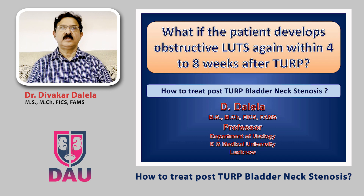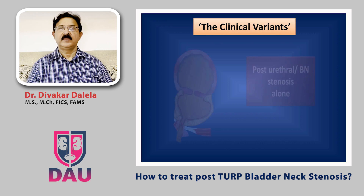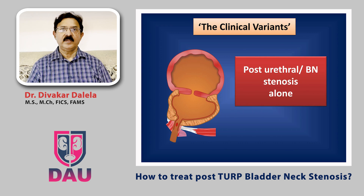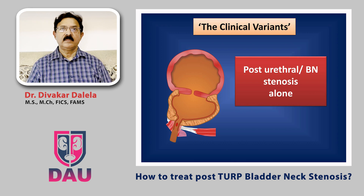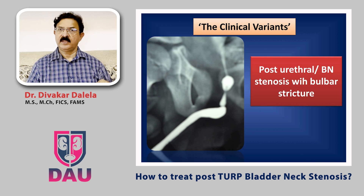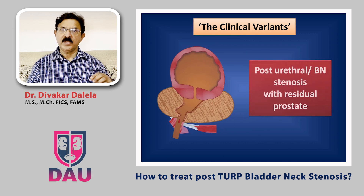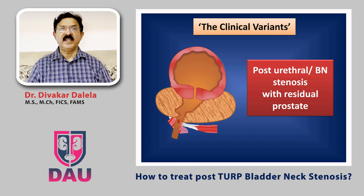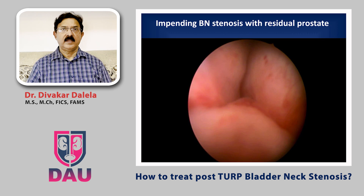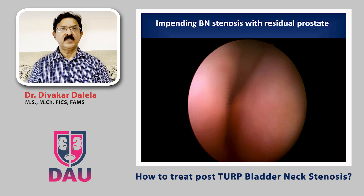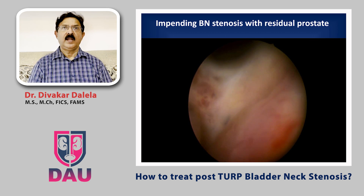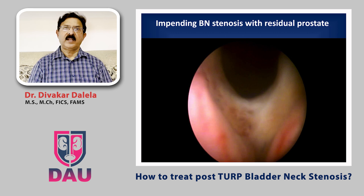There are many clinical variants. For example, there may be a patient of bladder neck stenosis alone, or there may be a patient who has bladder neck stenosis along with a stricture down below in the urethra. There may be a patient who has bladder neck stenosis as well as a significant amount of residual prostate. Here is a video of a patient where you can see the residual apical lobes and the bladder neck which is not nicely open.